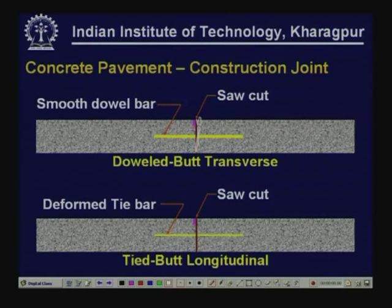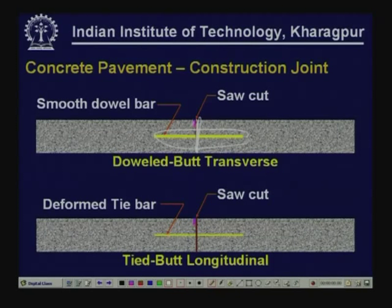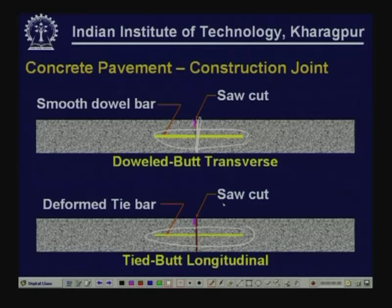Where load transfer across the joint is not a major problem — especially for pavements with not much heavy traffic, for low volume roads — you may not provide dowel bars, so you can keep the slabs together using tie bars; this also is a butt joint. These can be provided along longitudinal joints or transverse joints. When in the transverse direction we normally provide dowel bars to connect to the next slab. In the longitudinal direction, load transfer is not such an important consideration, so we normally provide tie bars.